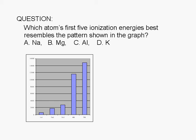Which atom's first five ionization energies best resembles the pattern shown in the graph? A, sodium; B, magnesium; C, aluminum; or D, potassium.